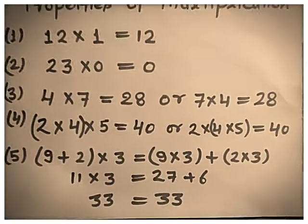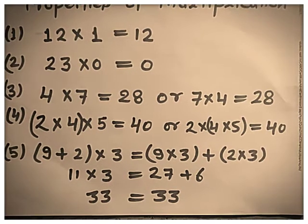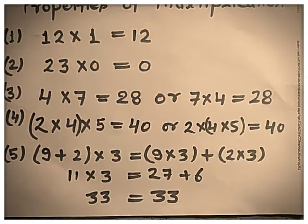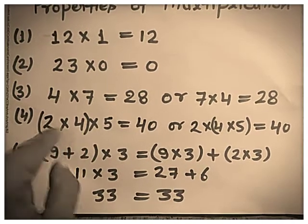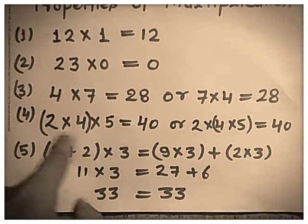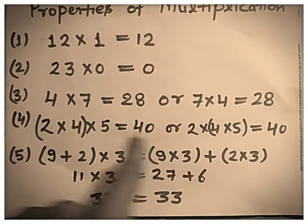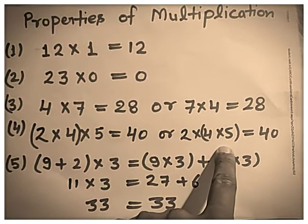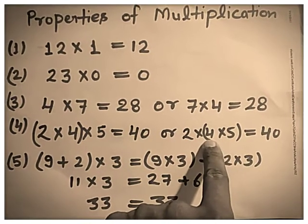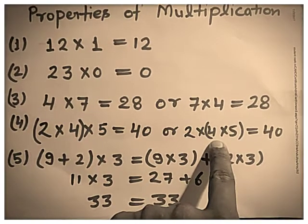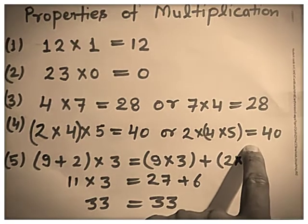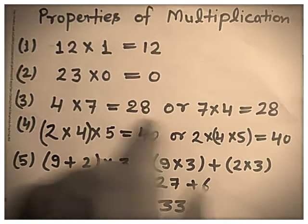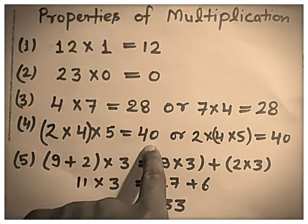Now, the fourth property: the product of numbers does not change even if we change the groupings. For example, 2 multiplied by 4, both in one group, then multiplied by 5: 4 twos are 8, and 8 fives are 40. Now if we change the grouping — 2 multiplied by the group of 4 and 5: 4 fives are 20, and 2 twenties are 40. The product is the same. So in the third property, if we change the order; in the fourth, if we change the grouping, the product remains the same.